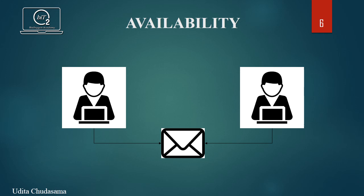The third principle is availability. Availability is important to ensure that the concerned information is readily accessible to the authorized user at all times whenever they require it. Sometimes, there are security attacks which attempt to deny access to authorized users and give access to unauthorized users. For example, breaking a website for a particular search engine so that a rival may become more popular. As you can see in the example, there are two users accessing the same information. If both users are authorized, then they should have access to the information. But if one user is authorized and the second is unauthorized, then only the authorized user should have access.